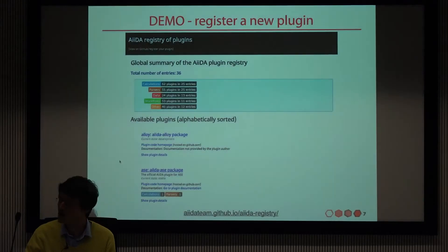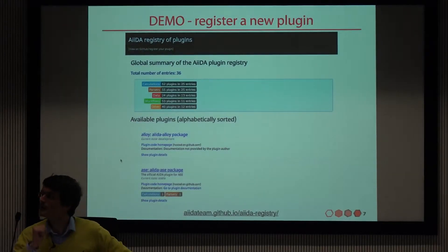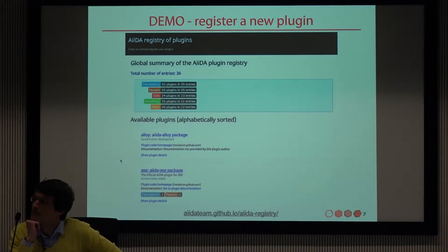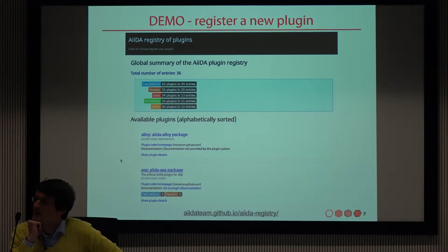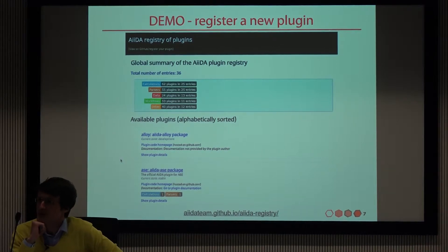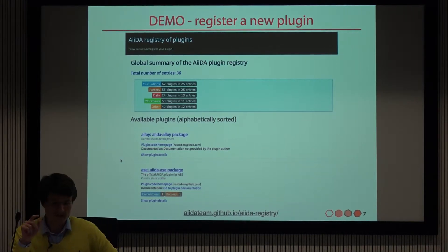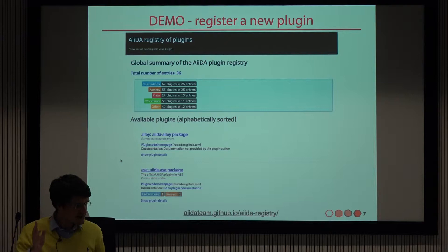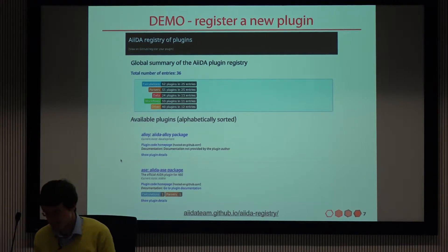Question: do you allow specifying the status independently for 0.12 and 1.0? Not yet at the moment, but that's a good point. At some point we need to decide what to do there. I can say a few words about plugin versioning.